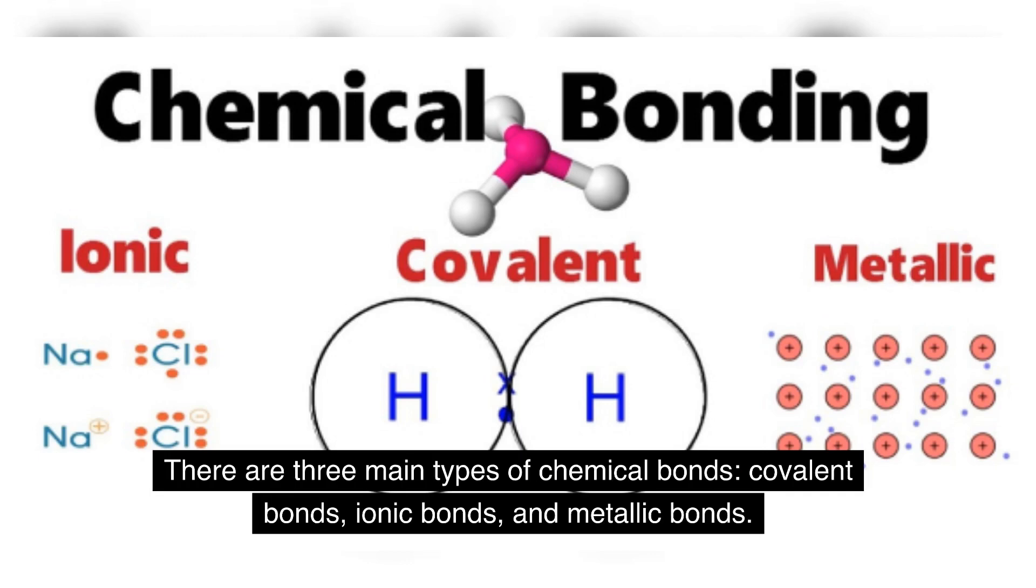There are three main types of chemical bonds: covalent bonds, ionic bonds, and metallic bonds.